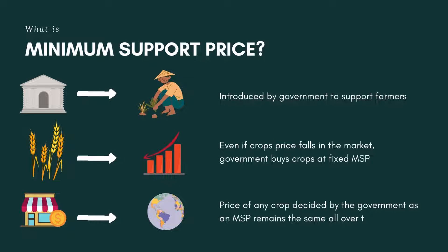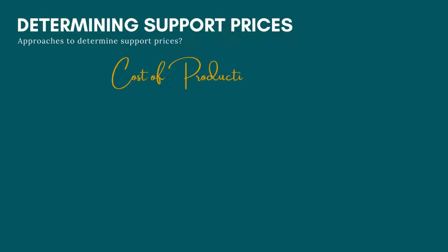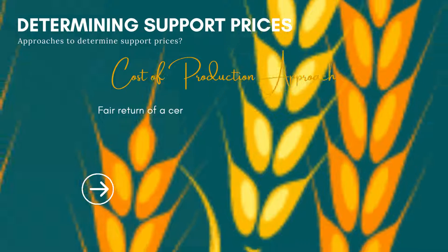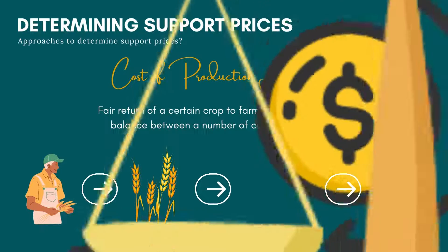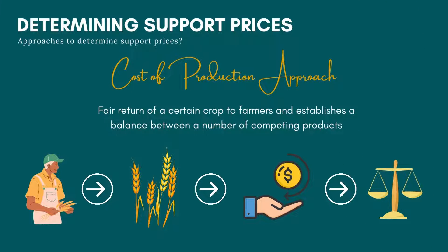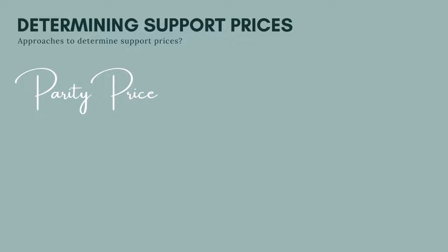The minimum support price of any crop decided by the central government remains the same all over the country. Out of the five approaches used to determine support prices, the first is the cost of production approach, which guarantees a fair return for a certain crop to the farmers and establishes a balance between a number of competing products.